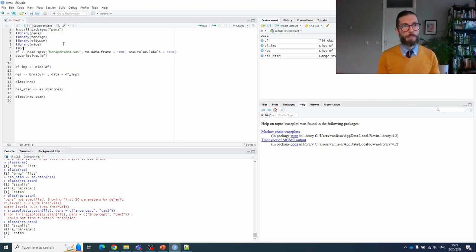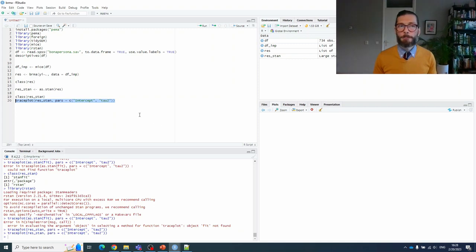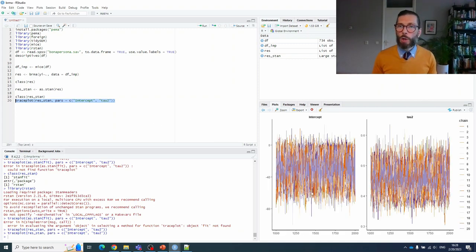then we can, for example, get a trace plot. And this shows us that the sampler mixed very well for both the intercept and the tau square. You could get this plot for every parameter in the model. So that indicates convergence, at least for those parameters.